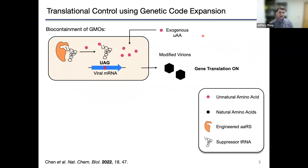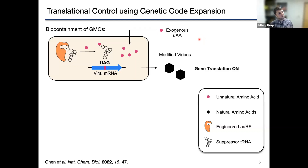Over the past 20 years since its inception, genetic code expansion has been used for many unique and interesting applications. One application we were interested in was using this system as a tool to control gene expression at the level of translation by regulating stop codon suppression.